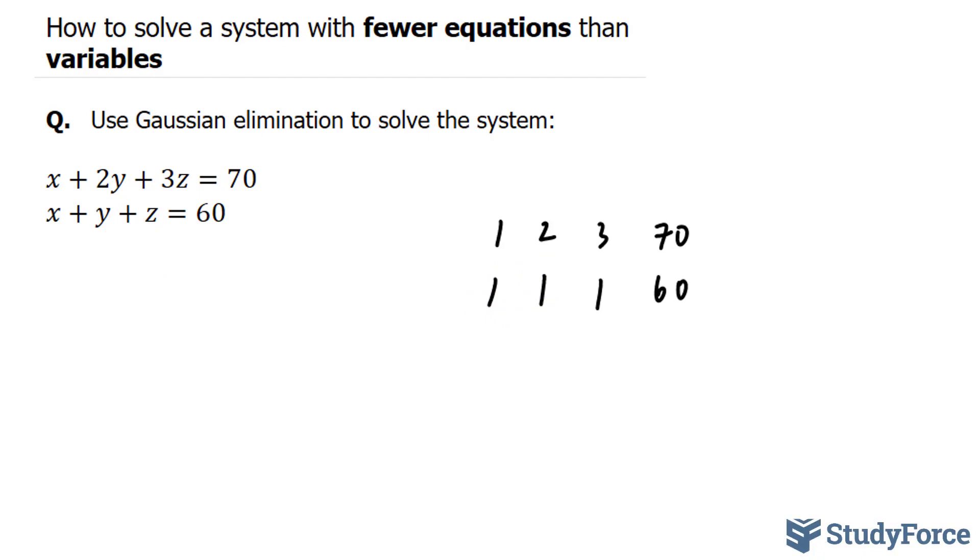Now I'll attempt to convert this augmented matrix into one that's in row echelon form, which means that our main diagonal needs to be 1 and 1, and it is, and the numbers underneath this one, namely this one, has to be equal to zero.